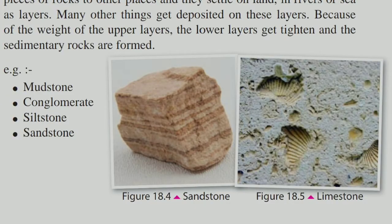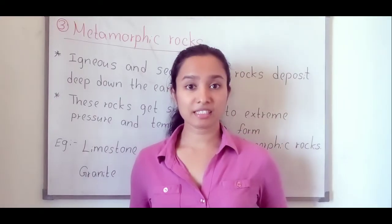Look at the picture on page number 102. You can see examples of sedimentary rocks: mudstone, conglomerate, siltstone, and sandstone. One example shown is sandstone, and the other sedimentary rock shown is limestone. You can see skeletons of animals in limestone — the skeletons of marine animals such as oysters deposit on the bottom of the sea, get subjected to pressure, and form limestone. Limestone is also a sedimentary rock.